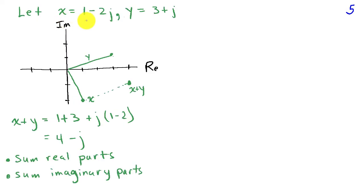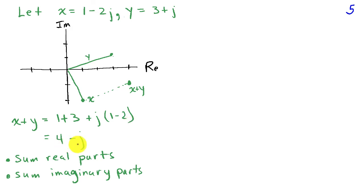Here's a simple addition example. If x is 1 minus 2j and y is 3 plus j, adding them simply requires adding the real parts and imaginary parts to give 4 minus j. Graphically, this is like adding vectors: we take the vector representing x and place the tail of y at the head of x, and x plus y lands at the point 4 minus j.